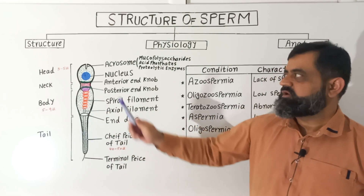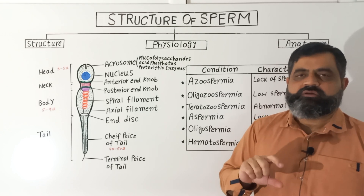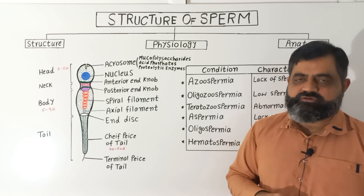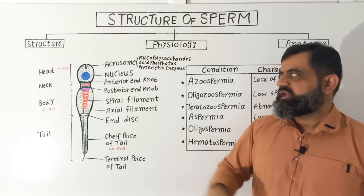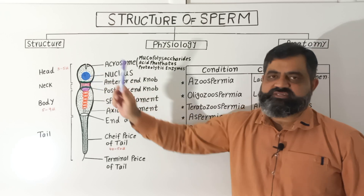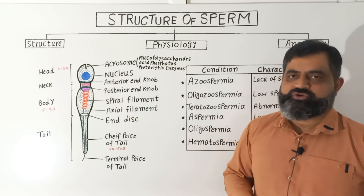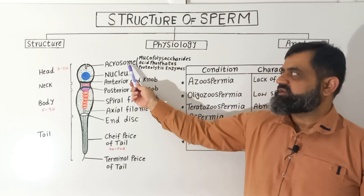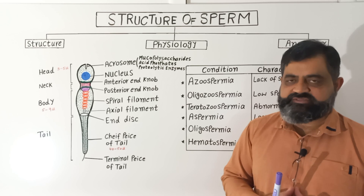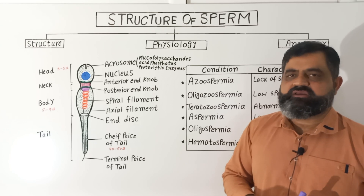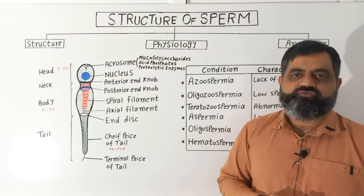First of all we are going to start with the head. The head region contains a knob-like structure which contains cytoplasm, cell membrane, as well as the nucleus in the center. The anterior portion of the head is known as the acrosome, which arises from the Golgi apparatus and is like an invagination or a bud on the surface of the head.